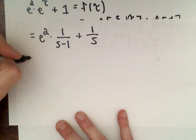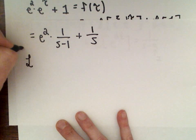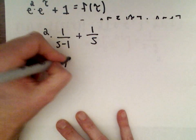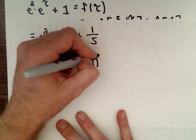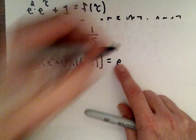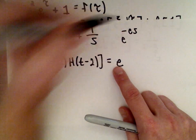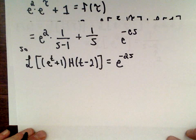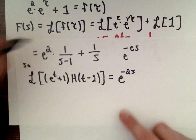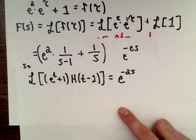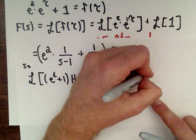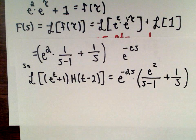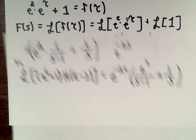Now applying the formula with c = 2, the Laplace transform of e^(t+1)·h(t − 2) equals e to the negative 2s multiplied by F(s), which is e^(−2s) times (e²/(s − 1) + 1/s). That's our solution for the second example.